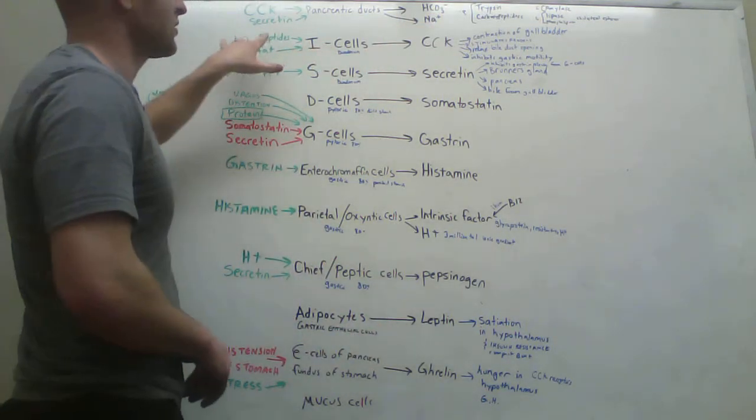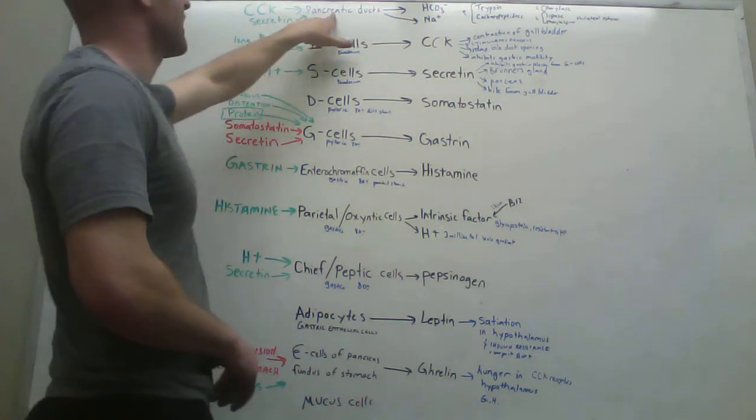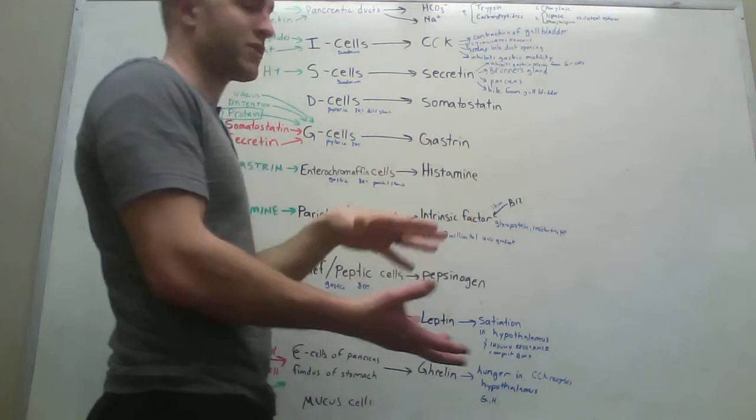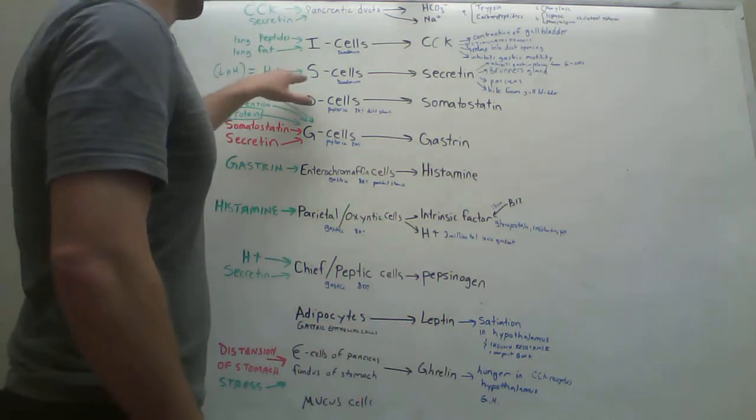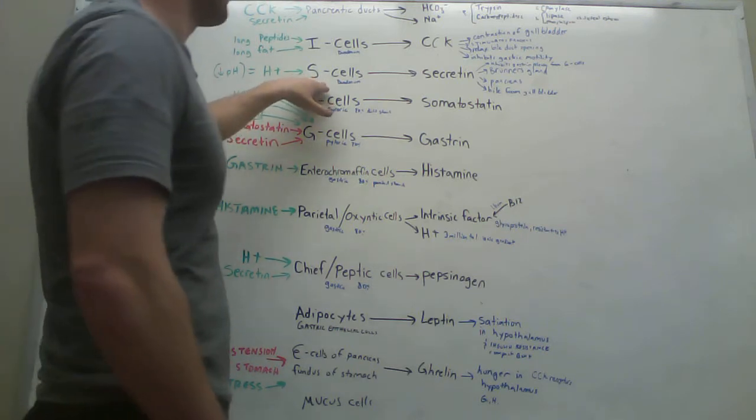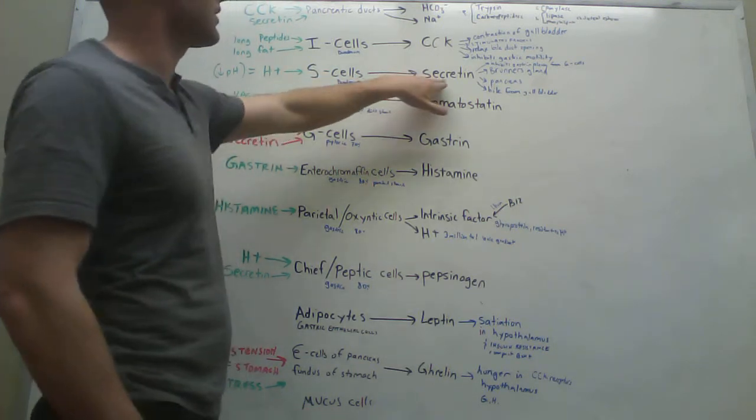So those are some of the things released from the pancreatic ducts. So I cell sends those things, releases cholecystokinin, cholecystokinin stimulates the pancreatic ducts, releases all the stuff, breaks the food down, cholecystokinin also slows things down. Next, S cells. S cells are what's also found in the duodenum, is what releases secretin.